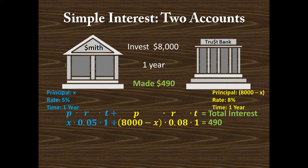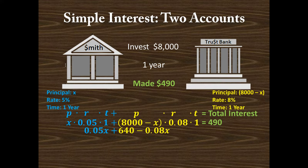Now we solve. X times 0.05 times 1 is just 0.05X. For the Trust Bank term, we distribute 0.08 to (8,000 − X): 8,000 times 0.08 is 640, and X times 0.08 is 0.08X. We could multiply 0.08 by 1 first, but 1 times anything is just itself.